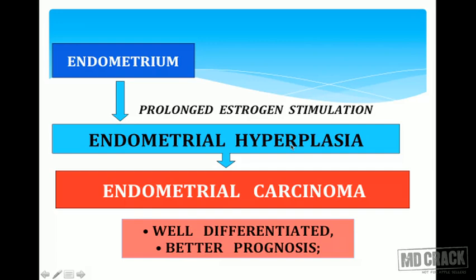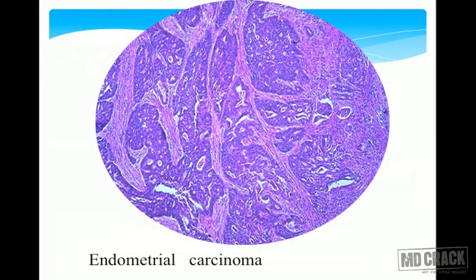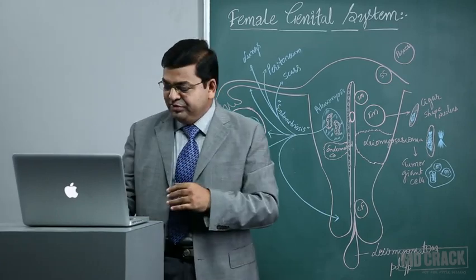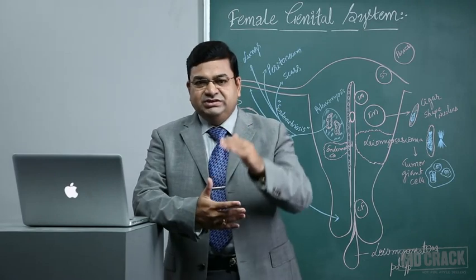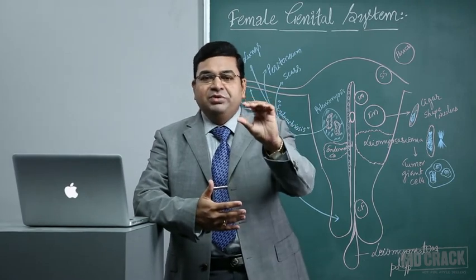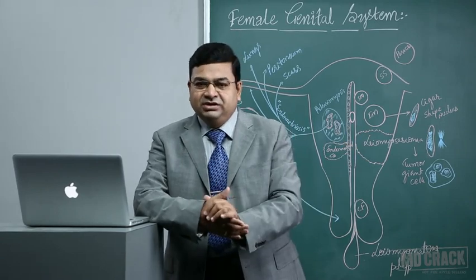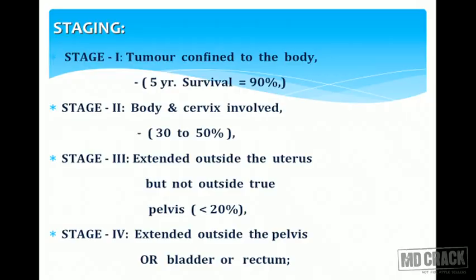Endometrium exposed to prolonged estrogen stimulation has a high chance of developing hyperplasia; with nuclear atypia, endometrial carcinoma can also develop. Tumors can be well-differentiated with better prognosis or poorly differentiated with worse prognosis. The endometrioid type of endometrial carcinoma shows abnormal glands with features of anaplasia infiltrating into the myometrium. The depth of myometrial infiltration determines staging — whether one-third, two-thirds, or the entire myometrium is involved.